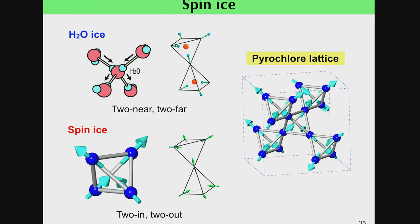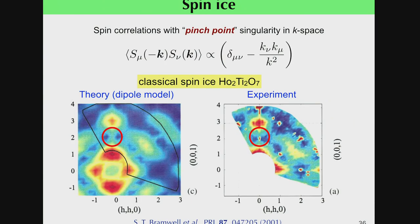The two-in, two-out spin configuration is realized, which is very similar to the ice-rule structure in water ice. This configuration gives rise to large ground-state degeneracy. Such spin-ice correlations appear as a pinch-point singularity in momentum space, as shown here.